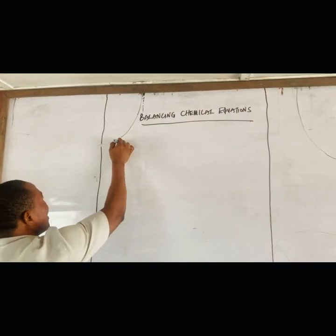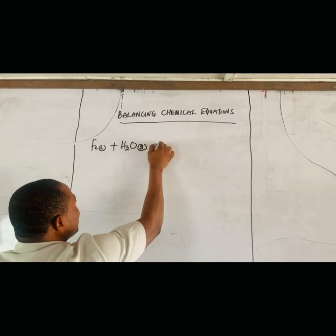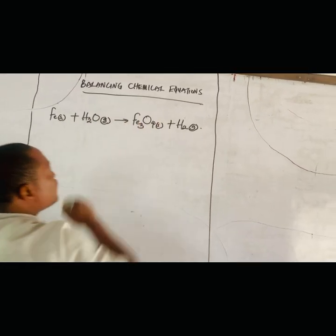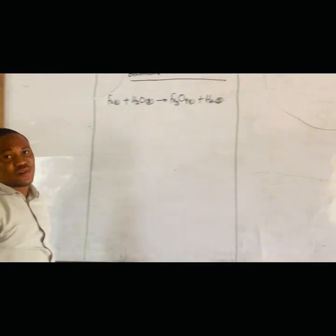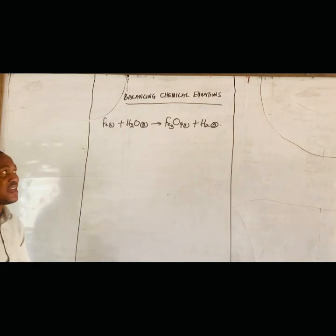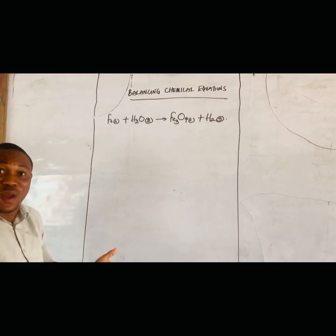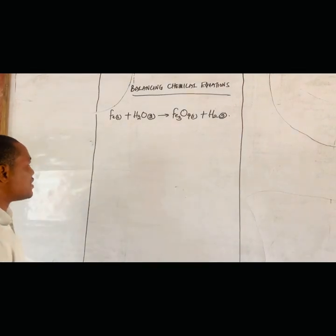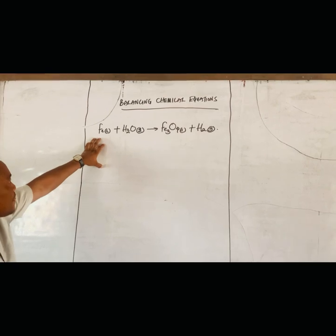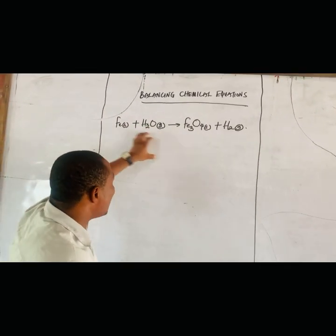Let's take this equation: iron plus water. This is an equation for rusting. When you expose iron to water, it rusts to give you iron(III) tetroxide — it becomes brittle. This is a chemical change; rusting of iron is irreversible. This is the reactant and this is the product. We want to balance this equation. Remember, everything on the right-hand side must equal everything on the left-hand side.